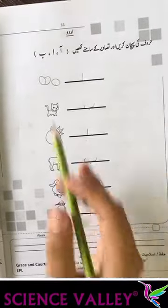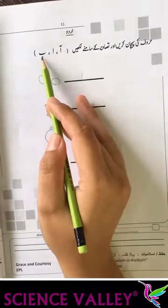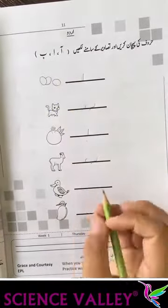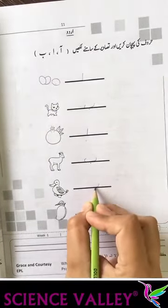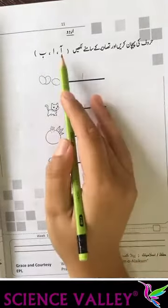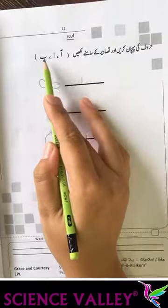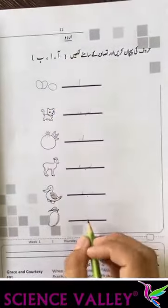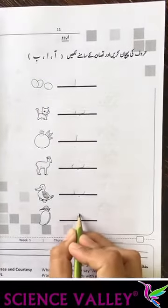Betak, betak kis se bantah hai? Alimada se, alif se, ya be se. Be se. Betak. Alimada se, am.